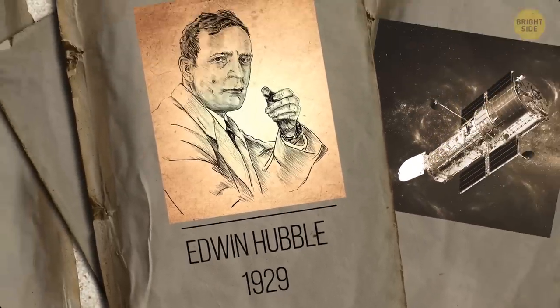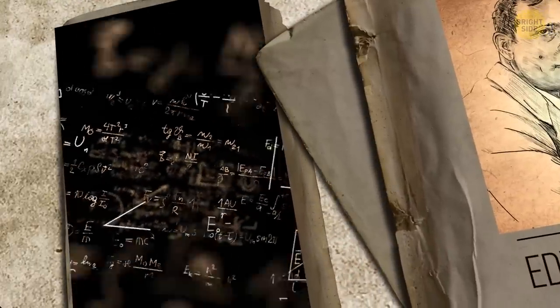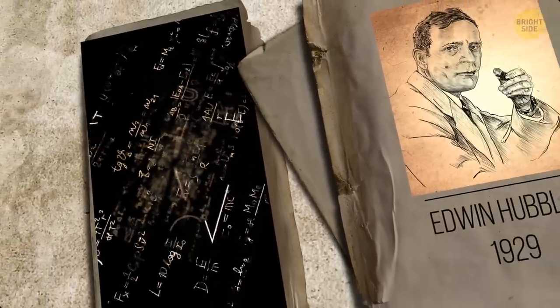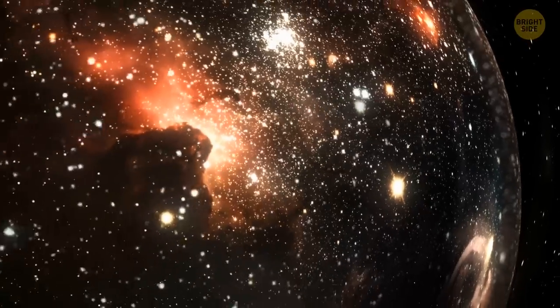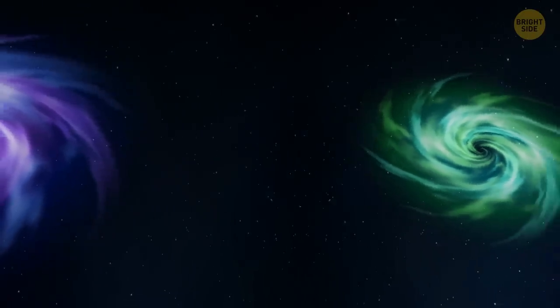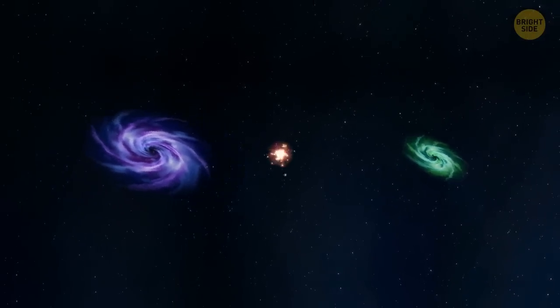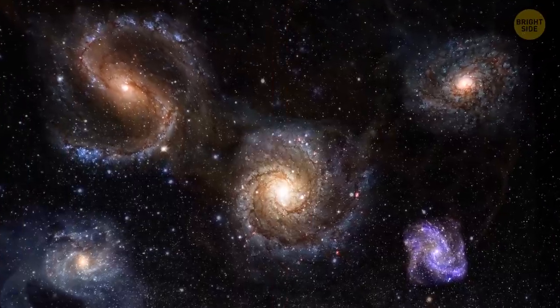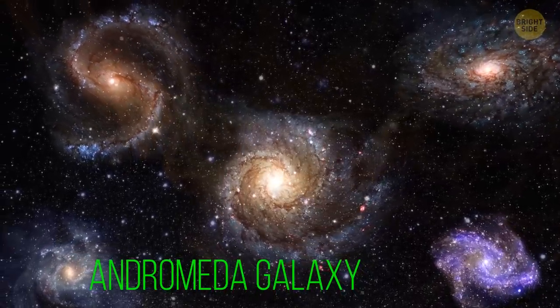In 1929, Edwin Hubble, after whom the Hubble spacecraft is named, published his spectroscopic study of 46 galaxies, the light from all but one of which was redshifted, moving away. Hubble's study provided the first evidence that the universe was expanding. The farther away a galaxy was from the Milky Way, the faster it was moving away. This was also the first evidence that the universe began with a big bang. The one galaxy whose light was blue-shifted, moving towards the Milky Way, was M31, the Andromeda galaxy, the closest galaxy.